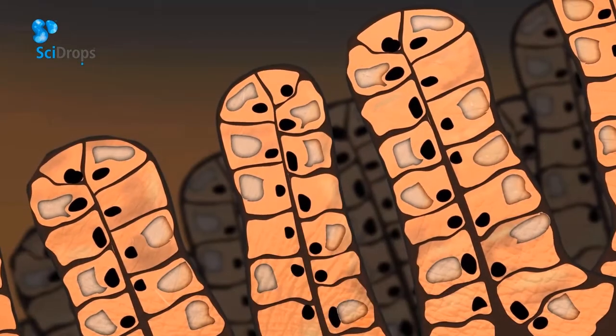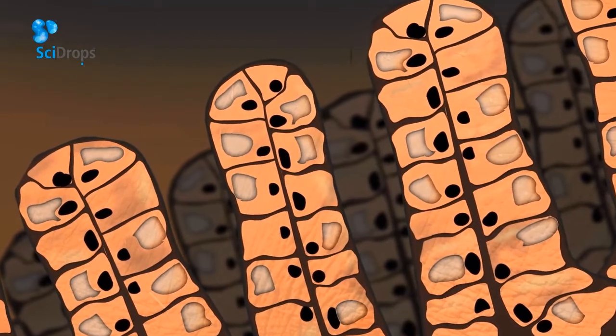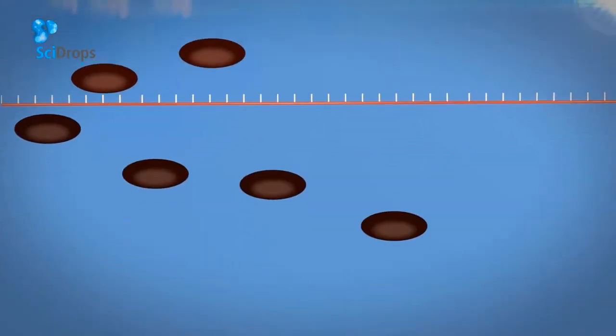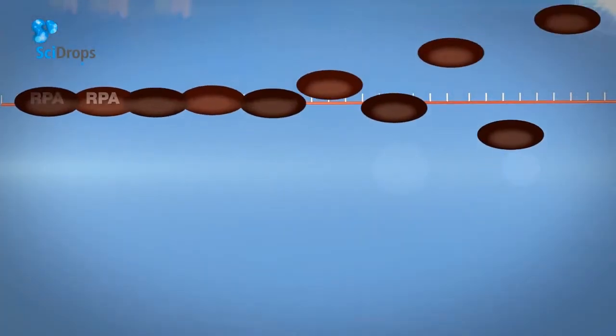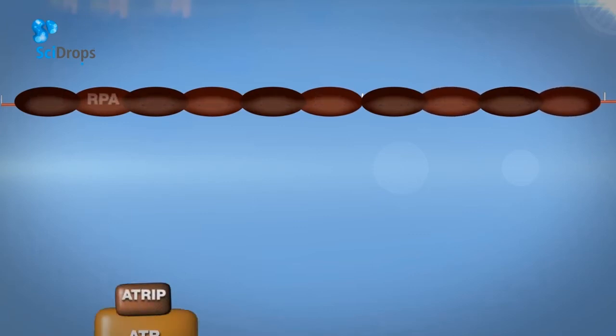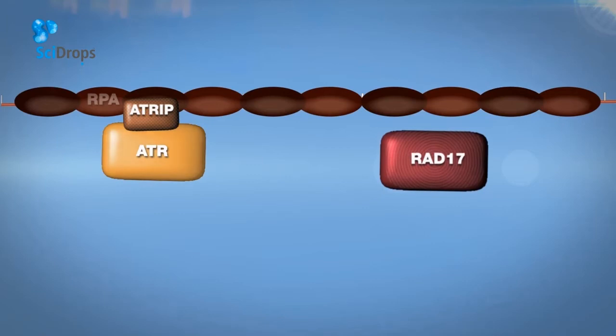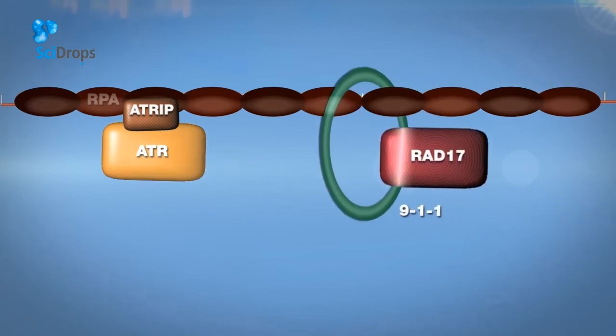Luckily, cells have evolved a very efficient network of proteins that detect and limit the presence of this problem. In cells, single-stranded DNA is rapidly coated by RPA. RPA-coated single-stranded DNA is then able to recruit the ATR kinase and its interacting partner ATRIP. RPA also recruits the so-called 911 complex through its binding to the loader RAD17.